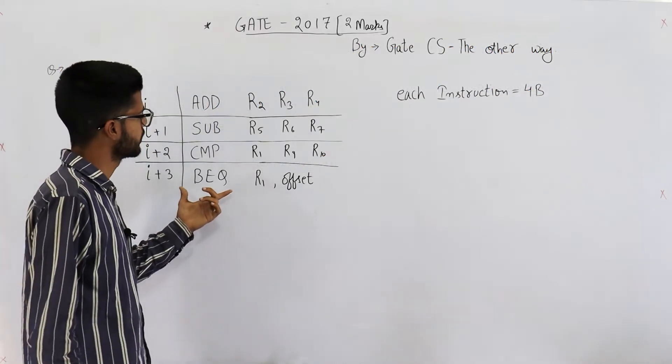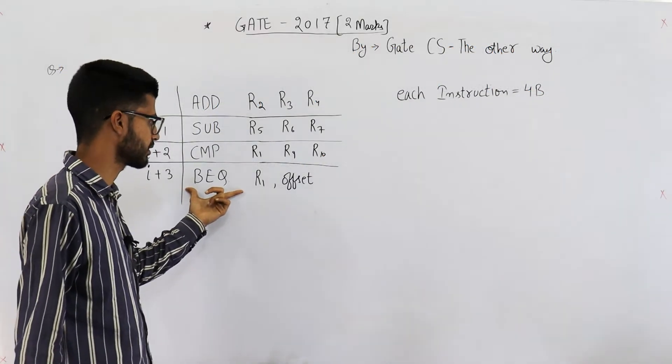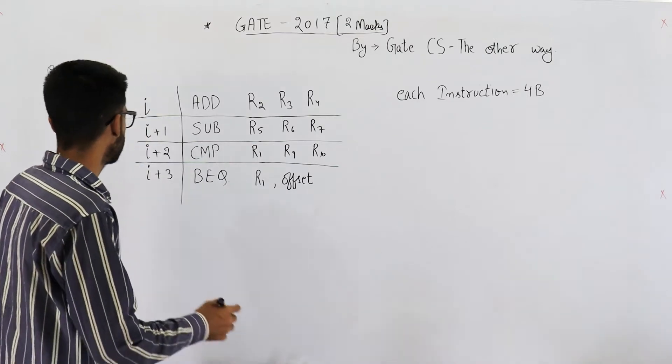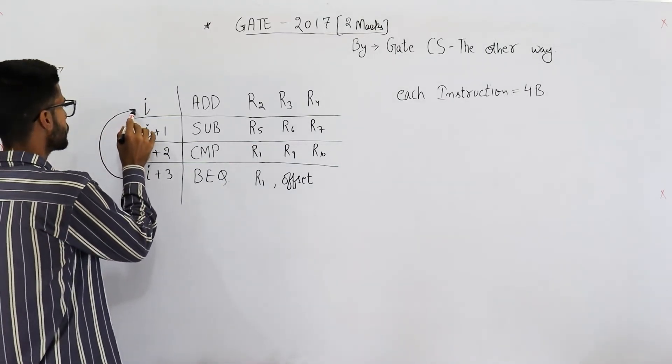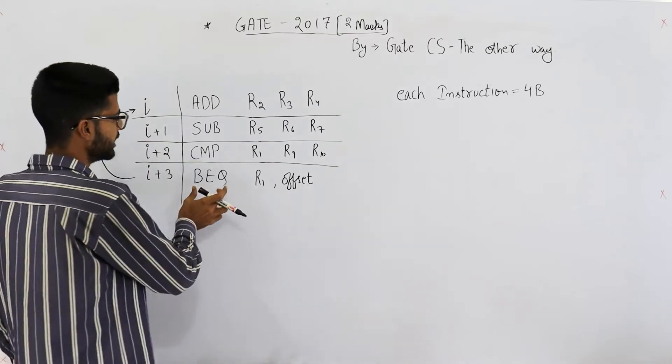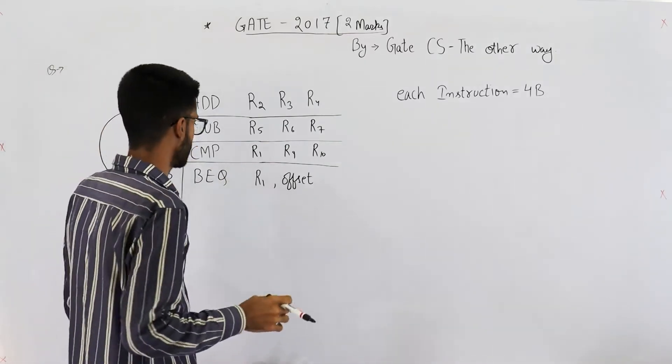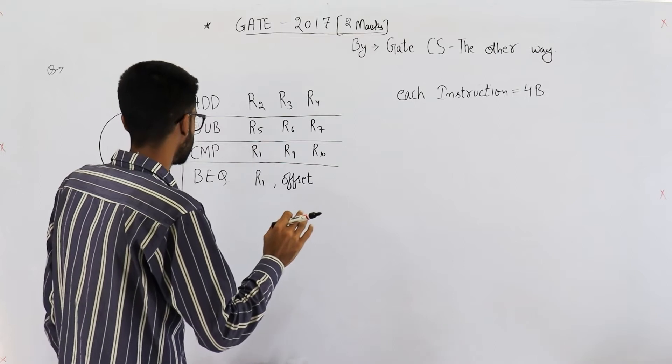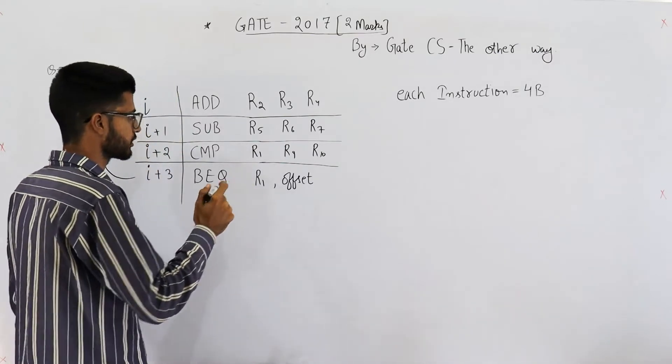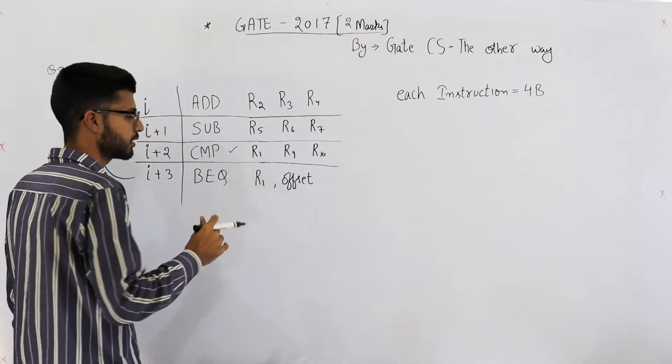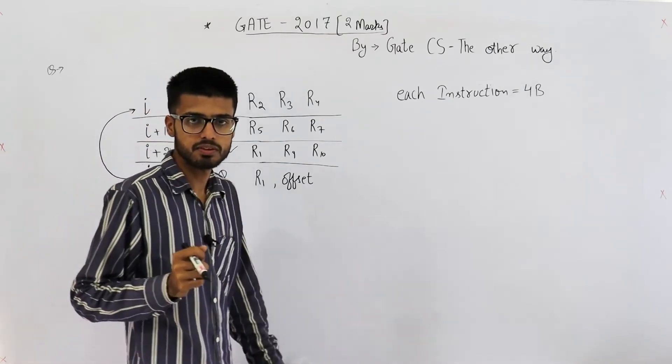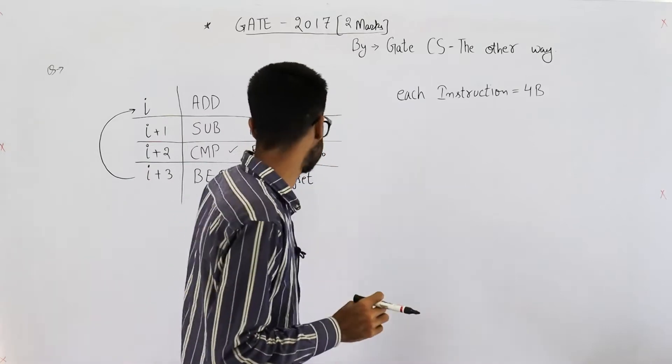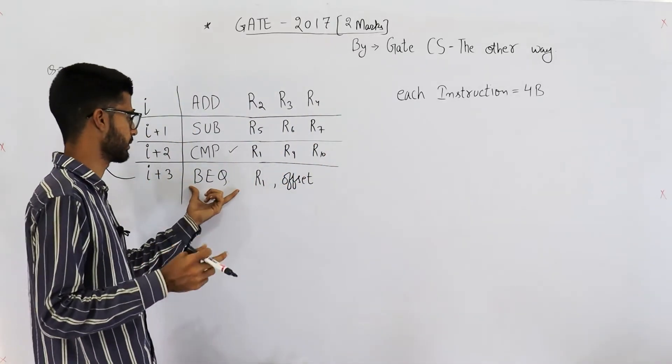So you are given this code and the last instruction is a branch instruction. It's given that it branches to instruction number i. BEQ is branch if equal, and whenever the result of previous instruction, the compare, was equal - that means we are comparing two registers and their values were equal - it branches.